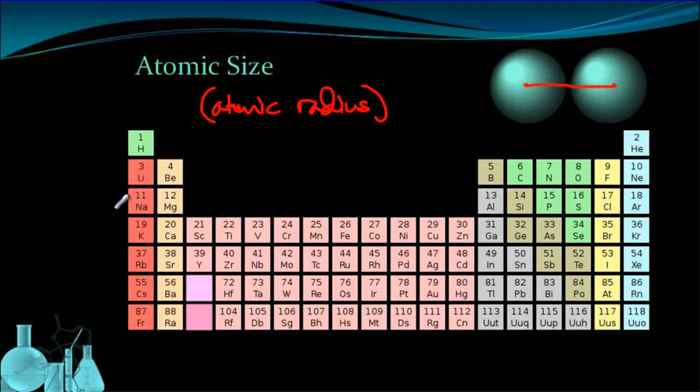What happens to the atomic size? Well, let's look at going down a group first. As we go down a group, the atoms get larger, so the atomic size increases. That should make sense because we're just adding on more protons and more neutrons and more electrons all the way through. It's getting much physically larger.